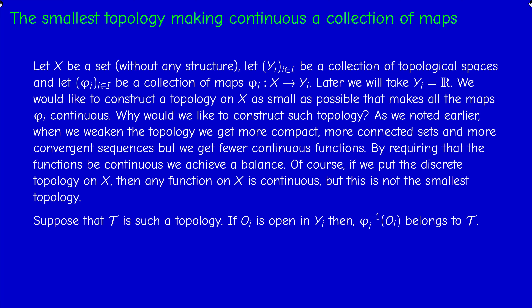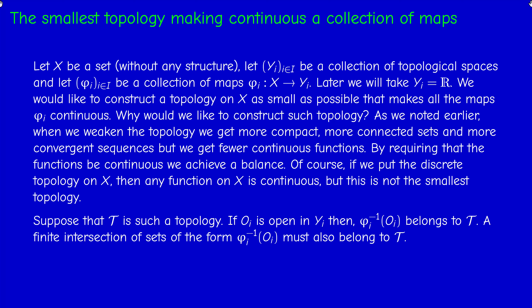What does it mean? Since each phi_i is continuous, the inverse image under phi_i of any open set of Y_i must belong to this topology. And since T is a topology — stable under finite intersections — any finite intersection of sets of the form phi_i⁻¹(O_i) must also belong to T. These sets are the building blocks for the topology.